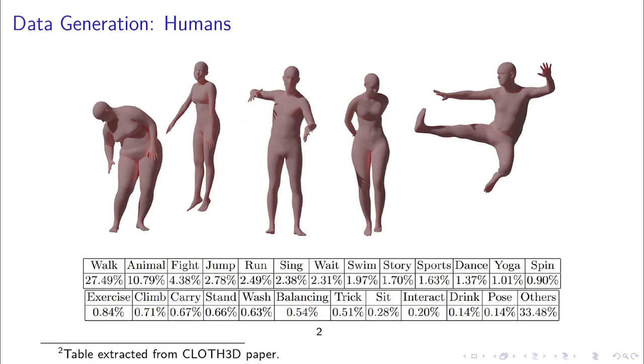To simulate garments, we need valid pose sequences. We obtain them from CMU mocap data. Finally, body shape is randomly sampled from a uniform distribution.